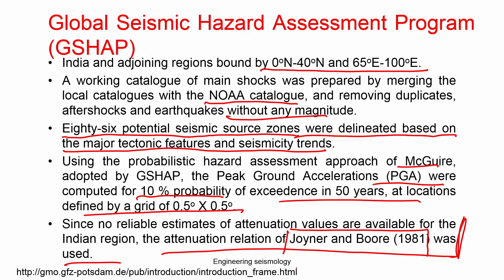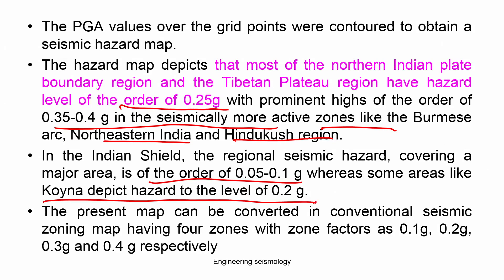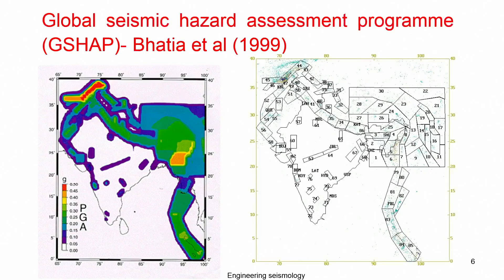For more information about this, you can visit the relevant website. They estimated PGA at each grid point, then mapped that PGA as a contour. The North Indian plate boundary region and Tibetan plate region have high hazard values, with the predominant high values in the seismically more active zones of the Burmese arc, Northeast India, and the Hindu Kush region. The Indian shield has a lower regional seismic hazard, while areas like Koyna have a hazard value around 0.2g. The present map can be converted into a conventional seismic zonation map with four zones at various hazard value thresholds — making it comparable with the existing zonation map.